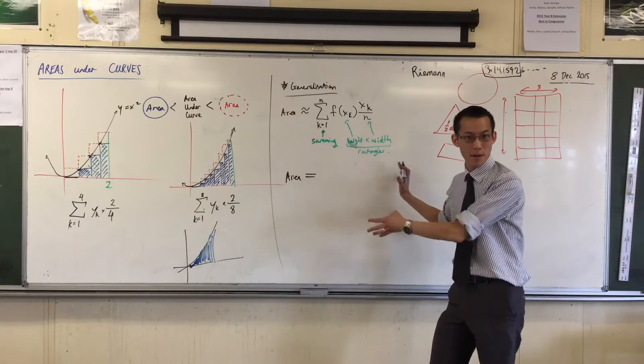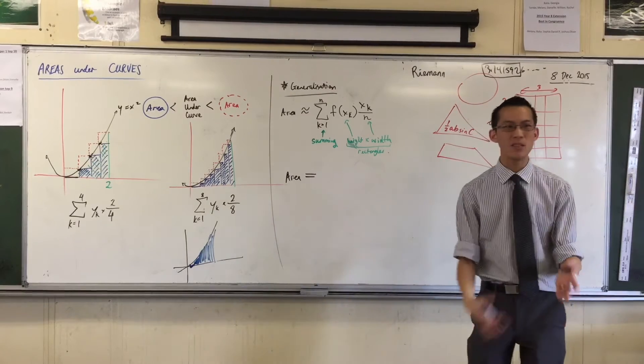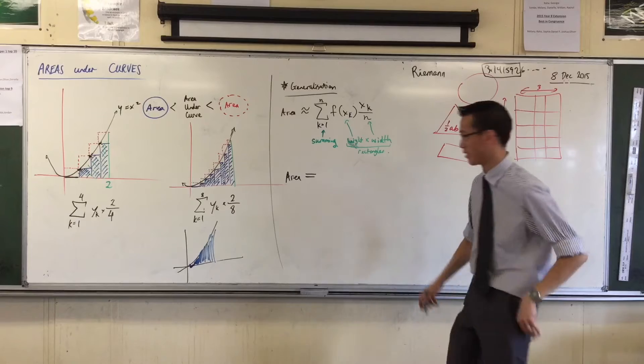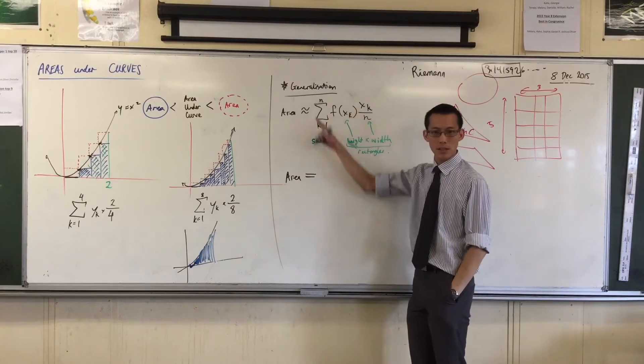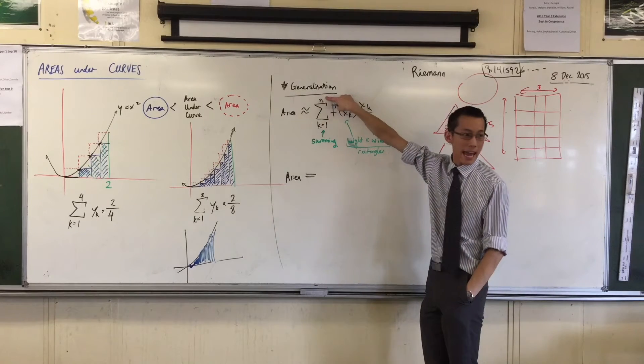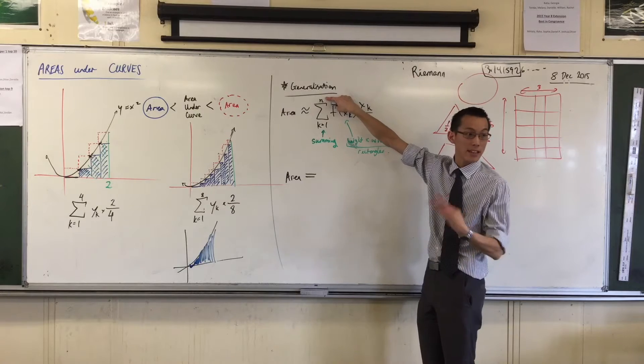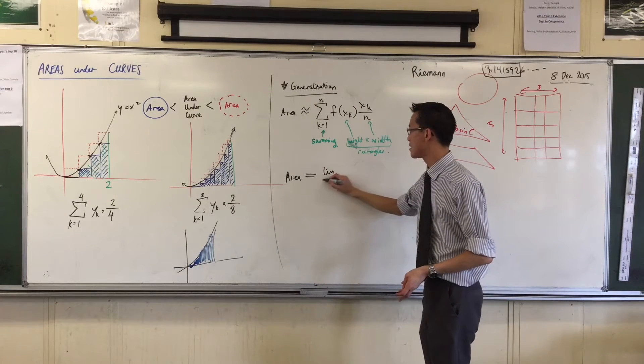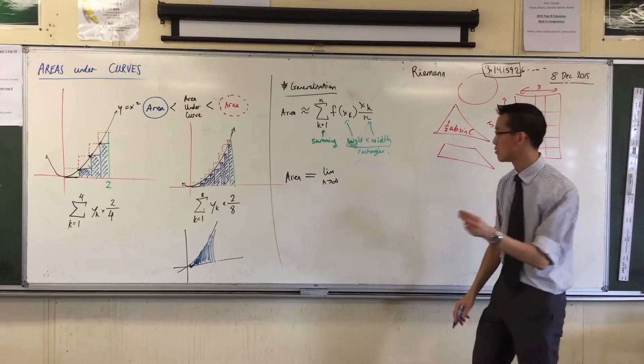He wrote this part that I'm about to write down next. He wrote it down but he wasn't sure how the math was going to pan out, at least at the beginning. He said look I know what to do with this thing. I just need to make n, well I need to take a limit. The limit as n approaches infinity, that's what I need to do.